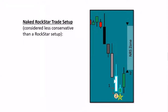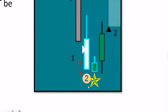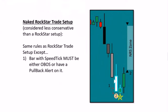The naked rockstar trade is a little less conservative because we no longer have support and resistance behind it, but we still have a good setup with the same rules. Since we don't have support or resistance, we need more confluence — more suggestions that price is about to change direction. We're looking for the bar to be overbought or oversold and/or have a pullback alert, preferably both. To qualify for a naked rockstar it just needs one or the other.